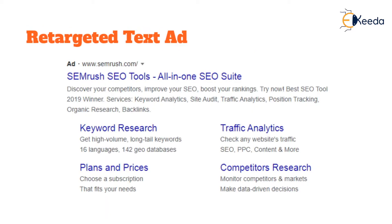After that, the user went on to search for other tools, and this is the retargeted text ad which started appearing on search engine results pages. As you can see, the ad by SEMrush includes keywords like keyword analytics, site audit, traffic analytics, position tracking, organic research, and backlinks — all relevant to a customer who visited their website.